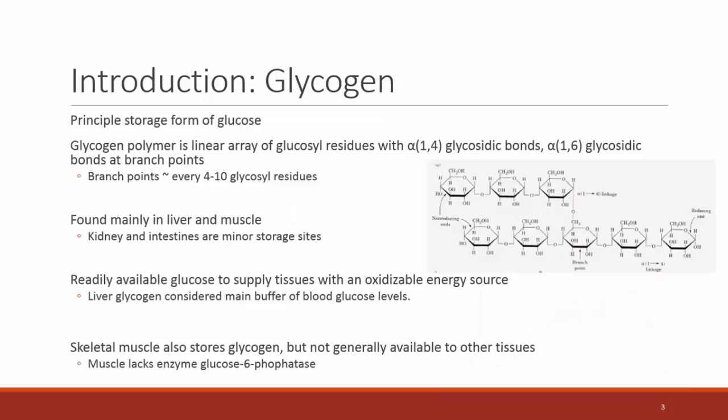Glycogen is many glucose molecules put together in a storage form — a very highly complex branched structure. Glycogen can hold many, many glucose molecules and is the principal storage form of glucose. Glycogen has primarily two kinds of bonds between glucose molecules: in linear linkages it's an alpha-1,4 linkage, and at branch points it's an alpha-1,6 linkage.